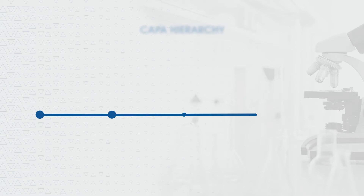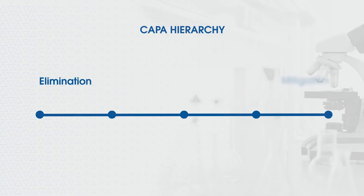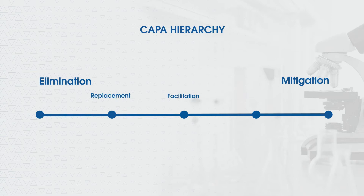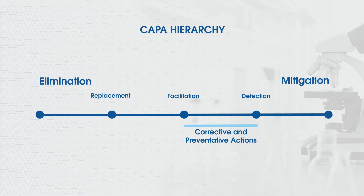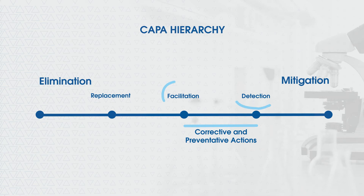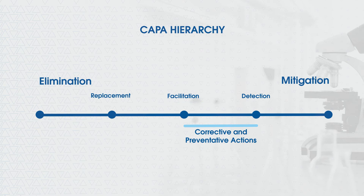That's a significant number and it also represents a significant opportunity. That's where the Kappa Hierarchy plays a role. Picture a sliding scale with elimination at one end and mitigation at the other, and in between we have replacement, facilitation, and detection. Often what investigators will do is conduct their root cause analysis, identify corrective and preventative actions. And often those CAPAs are at the lower end of the scale — they may come up with a way to detect the defect and remove it, or a way to facilitate a task.